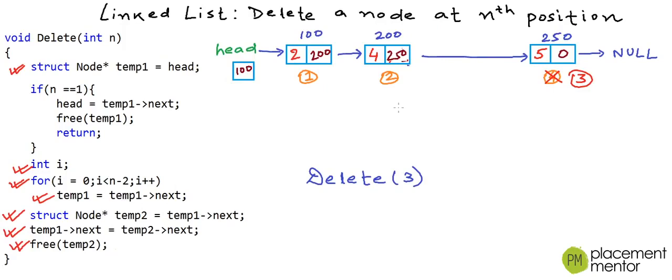This was deleting a node at a particular position in the linked list. We can also have a problem where we want to delete a node with a particular value — you can try implementing that. In the coming lessons we will see more problems on linked lists. Thanks for watching.